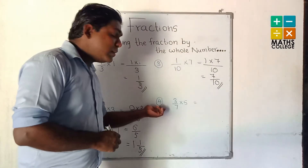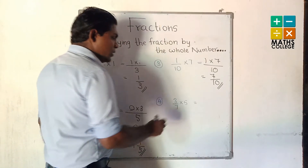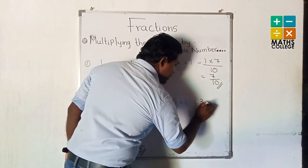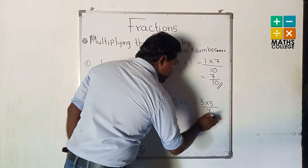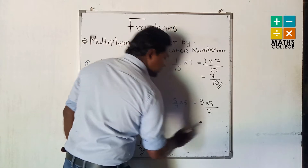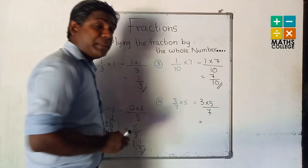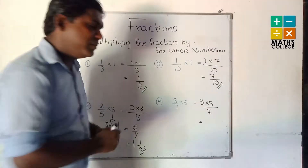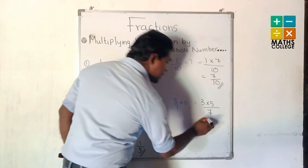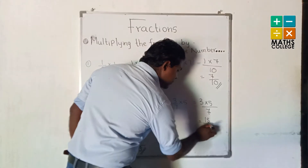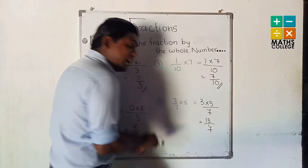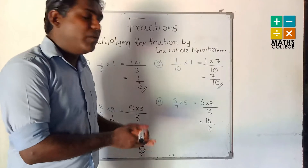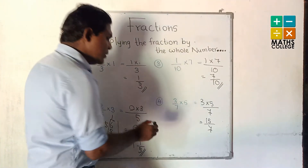Then the last one: 3 multiplied by 5 upon 7. 3 multiplied by 5 is 15. So the answer is 15 upon 7. Again, we have an improper fraction, so we have to keep it as a mixed number.